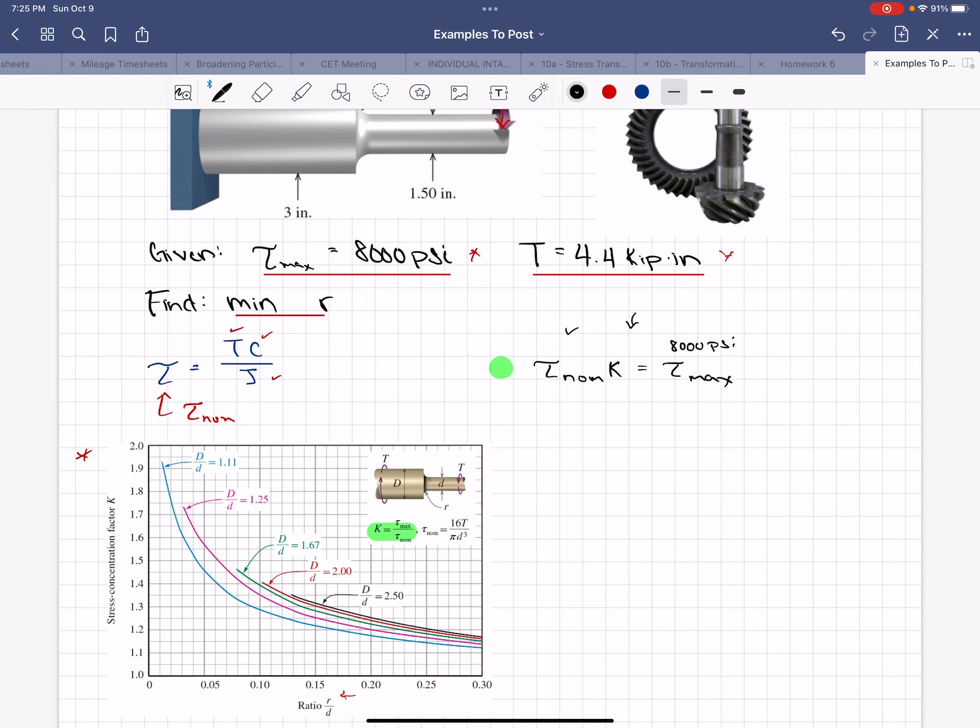This tau max equals 8,000 psi, so we know everything we need to know to calculate this shear nominal and then we can calculate k and use the table to find r. So we're going to calculate tau nominal now using 4,400 pound inches, that's our torque, times the smaller diameter of 1.5 inches divided by 2, we divide all of that by the polar moment of inertia which is pi over 32 times the diameter to the fourth, so 1.5 to the fourth.